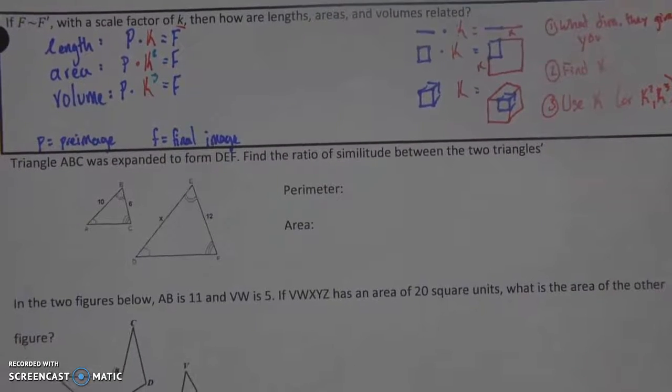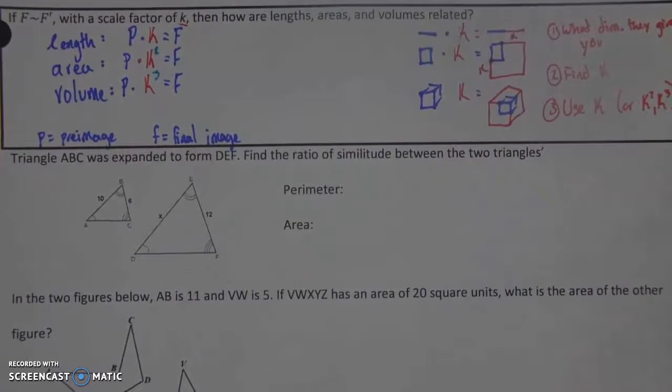So, let's just kind of see how this works. Triangle ABC was expanded to form a new triangle DEF. Find the ratio of similitude between the two triangles perimeter and then area.